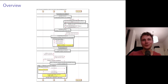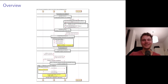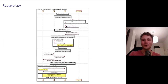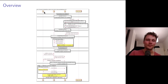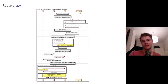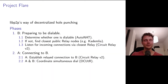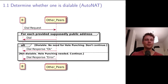Let's dive into how Project Flare works in detail. Don't get too close to your screen — I don't expect you to read everything — but basically we'll split this graphic into small parts and walk through each of the steps. As a quick overview, we have multiple participants: A, a relay R, B, and some other nodes in the network. Our goal is for A to establish a connection to B.